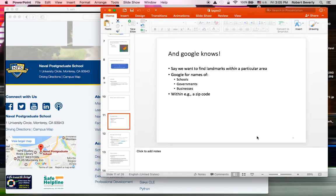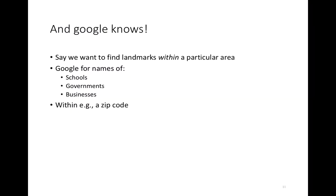Not only that, but Google often knows these kinds of locations. So if we want to find landmarks within a particular area — say we know the target is within California — it would be great to find landmarks in that area. One thing this paper shows is that we can use Google as our database for finding such websites, which allows us to find landmarks. For instance, we might Google for schools, governments, or businesses within a particular zip code.